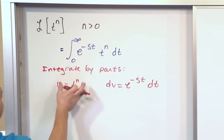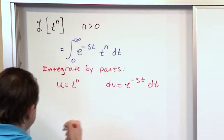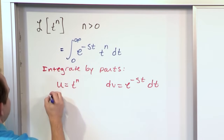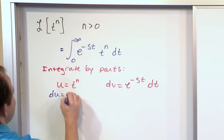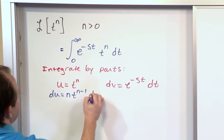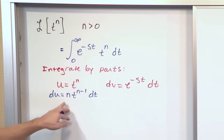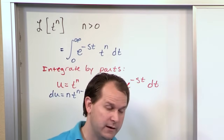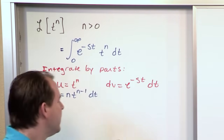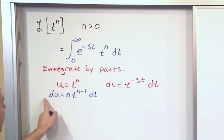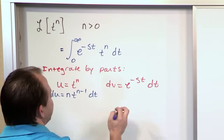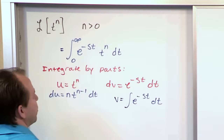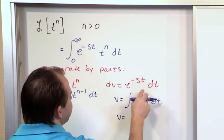What you do is you take one part of the integral, define it as u, take everything else including the differential and define it as dv, and then we're going to make a substitution. But before we can make a substitution, we have to take the derivative. So du is equal to n times t to the n minus 1, dt. If it's t cubed, the derivative with respect to t is 3 times t squared, which is n minus 1. So you take the exponent, put it in front, and then you have n minus 1 up there. Then to find v, we need to integrate e to the minus st dt. This is an exponential.